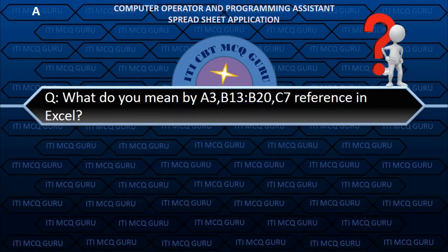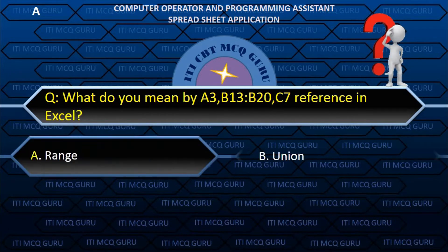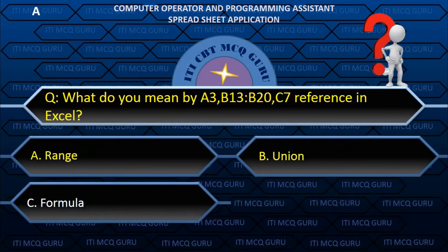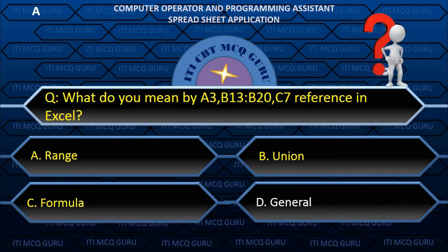What do you mean by A3:B13 colon B20:C7 reference in Excel? A. Range.